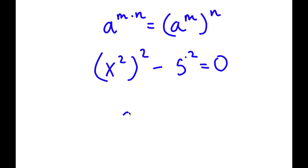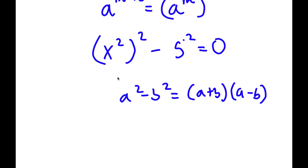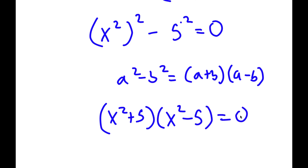Now, if I have something in the form a squared minus b squared, this is equal to a plus b times a minus b. So in this case, this can equal x squared plus 5 times x squared minus 5, which is equal to 0.